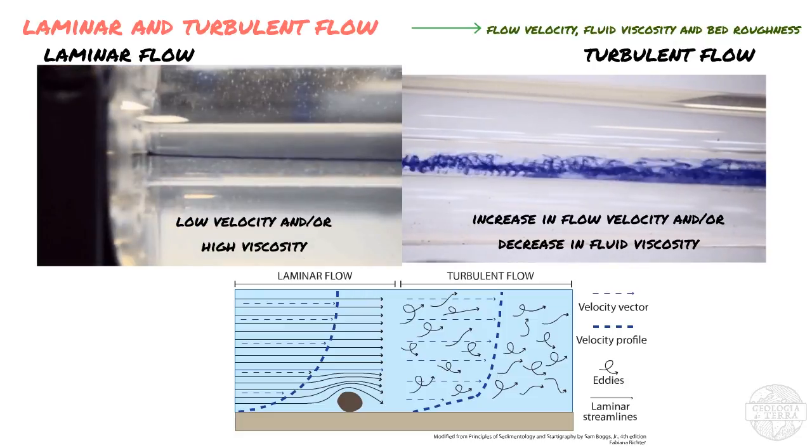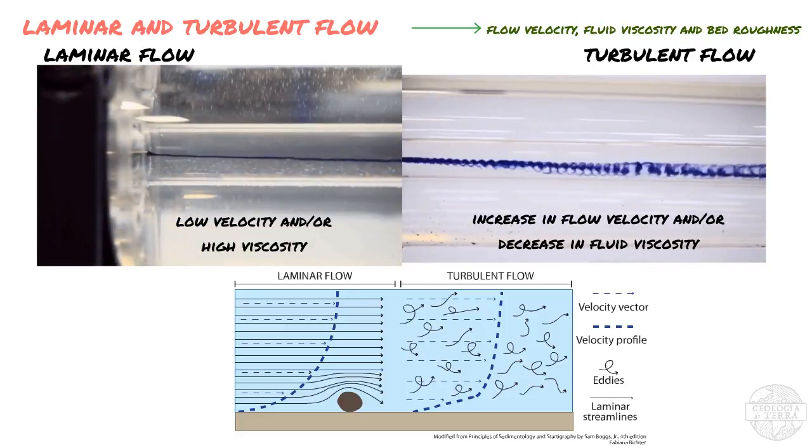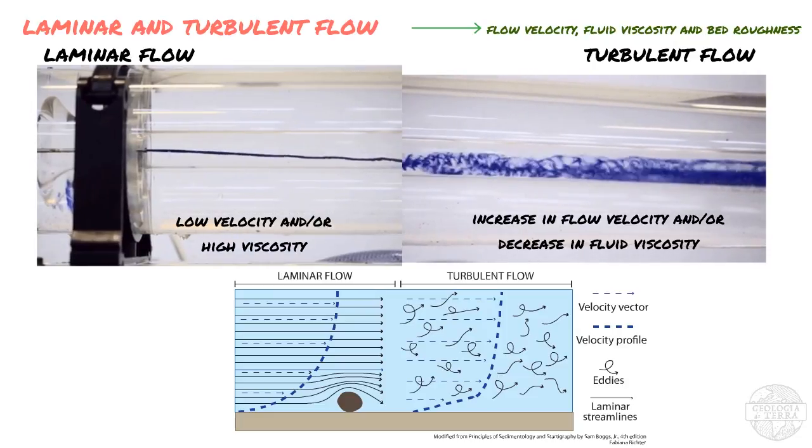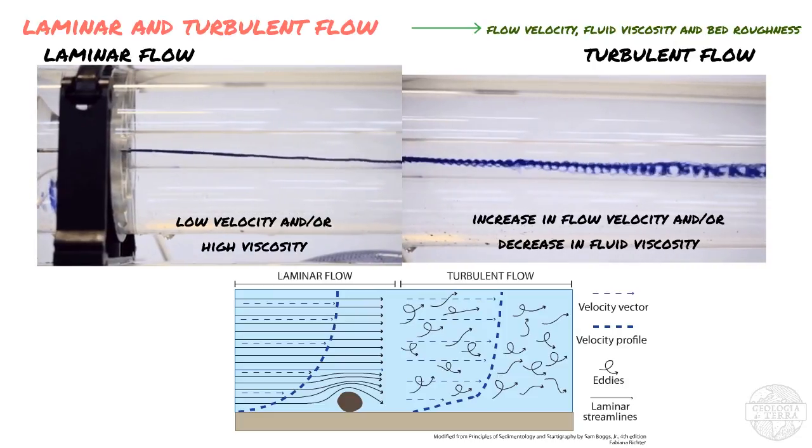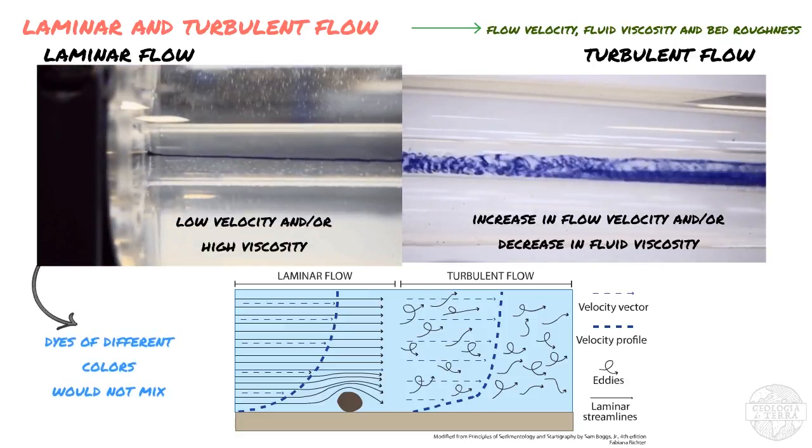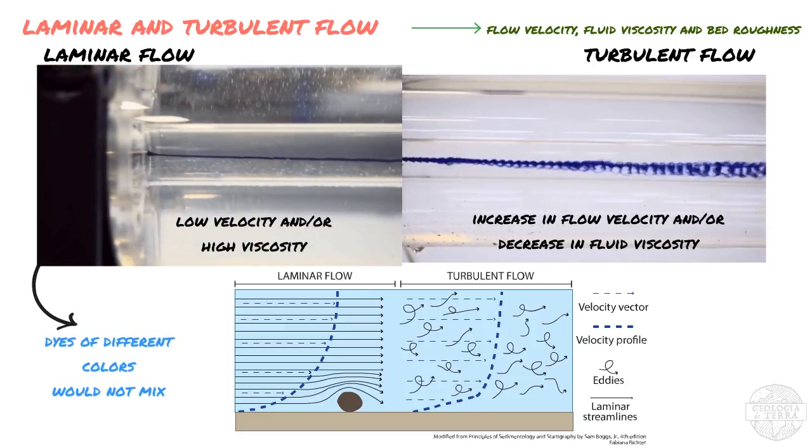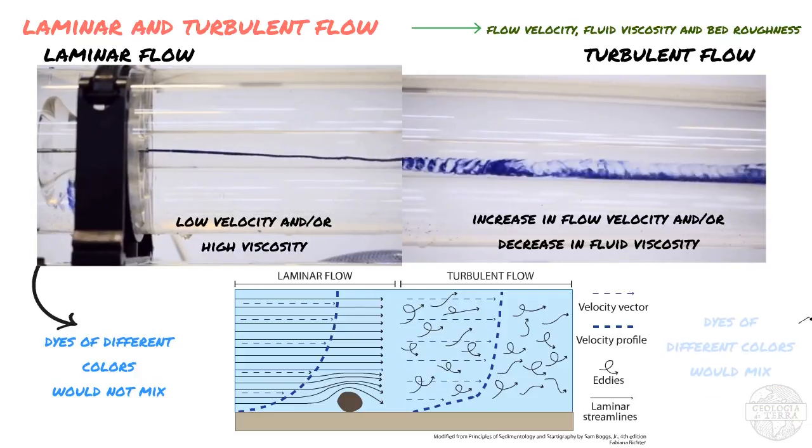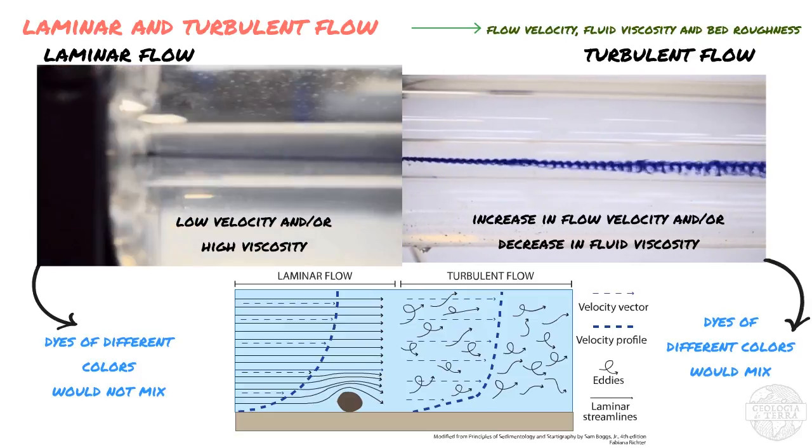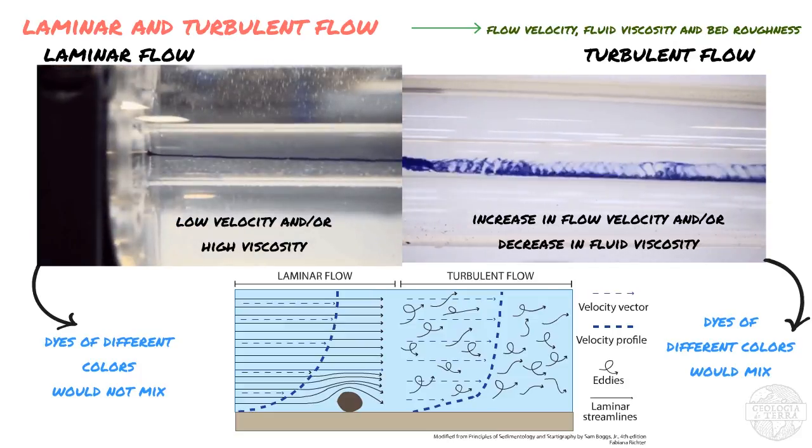Extremely turbulent masses of water form what we call eddies. Thus, turbulence is an irregular or random component of a flow. For example, if we have a heterogeneous flow that is composed of several dyes of different colors, these components would not mix if the flow is laminar. But if it is a turbulent flow, they will mix because the current lines intersect each other all the time.